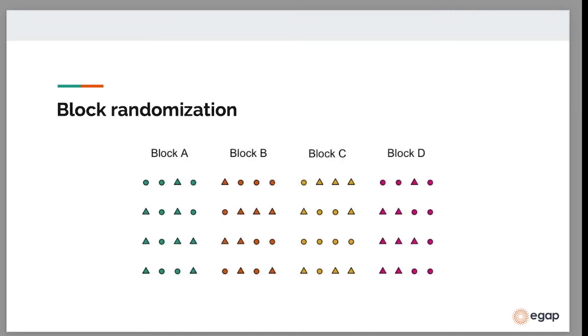With block randomization, we randomize within each group, and the group is called a block. So you can see that we assigned one half of the individuals in each group, or each block, to treatment. So within each group, half of these are triangles and half of these are circles. You can see that we have triangles and circles within each group.